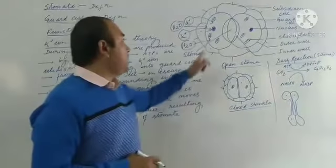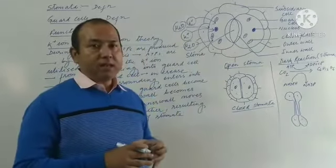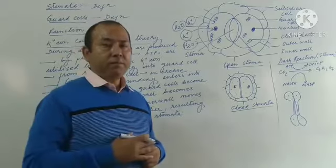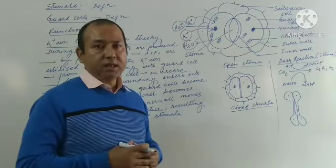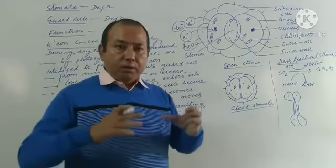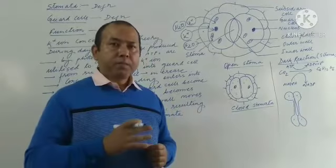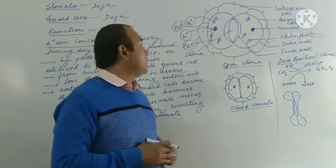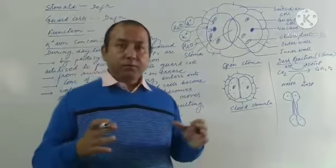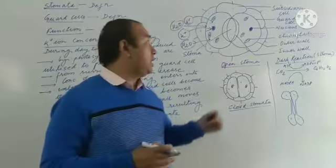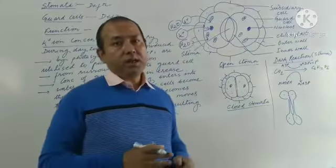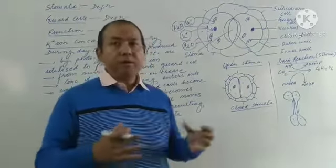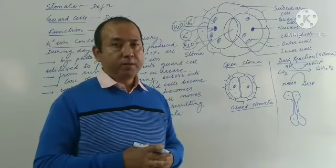During the nighttime, the potassium ions present inside the guard cells diffuse to the surrounding. As they diffuse out, the concentration inside the guard cell decreases, and due to this reason, the water present inside the guard cell moves to the surrounding by the process of exosmosis. The guard cell loses water, becomes flaccid, the outer wall shrinks, and the inner walls move closer to each other, resulting in the closing of stomata.